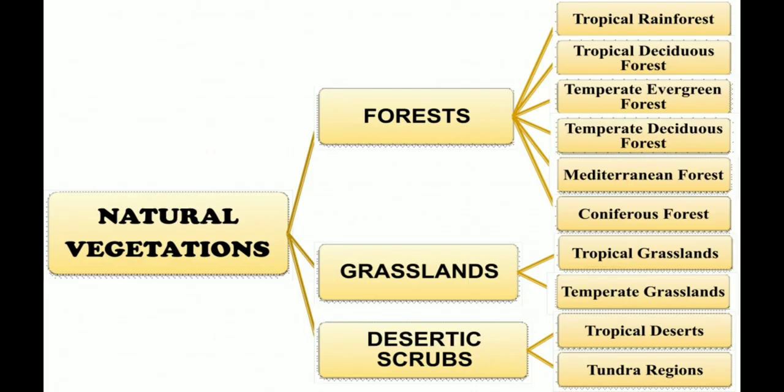The distribution of natural vegetation depends on temperature and moisture. The major vegetation types of the world are grouped as forests, grasslands, crops, and tundra. Forests are found in areas of heavy rainfall. As the amount of moisture decreases, the size of trees and their density reduces. In regions of moderate rainfall, short trees and grasses are found.